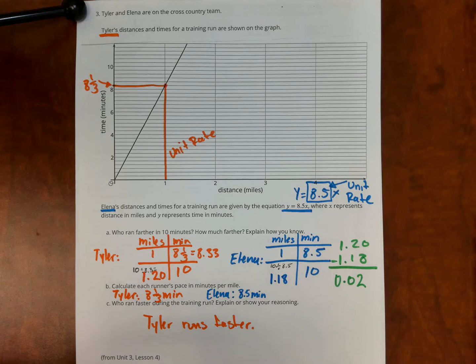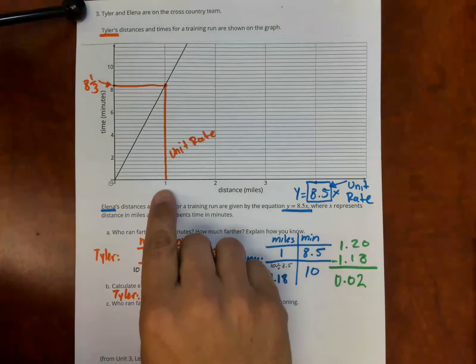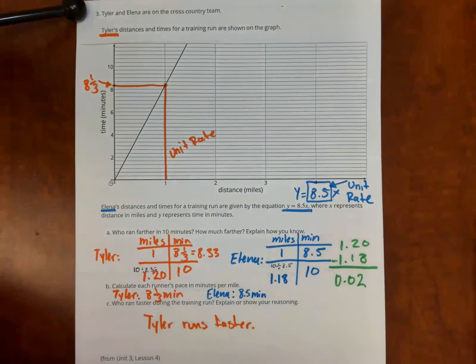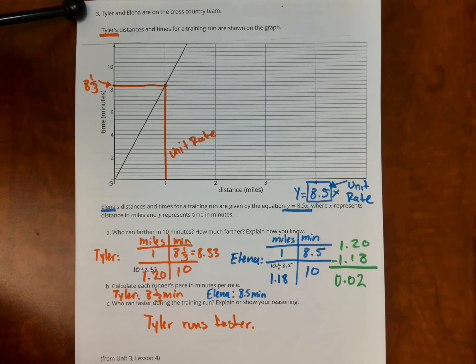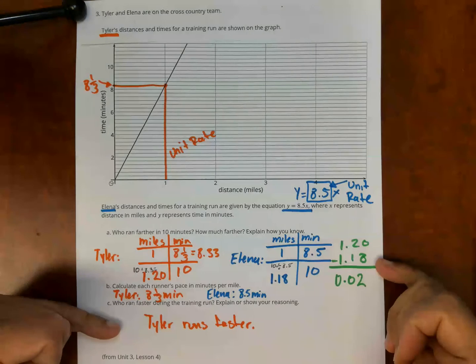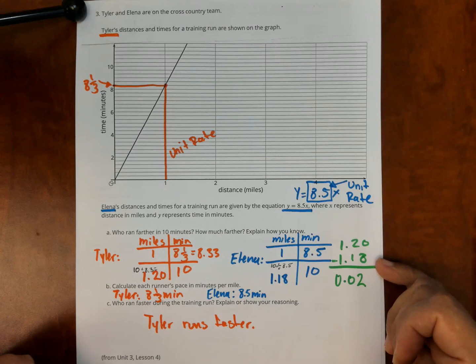So Tyler runs faster. And what we can see here, because each student is going at a constant rate, if Tyler runs faster at one minute, then you know, he's going to run faster at two minutes, at three minutes. So it's just in general going faster. And same for Elena, right? If Elena is going slower at one minute, then you know that no matter how many minutes, it will be the same person going faster. We see our explanation right here by answering part A, you're also answering part C, because if Tyler runs farther in 10 minutes, then Tyler is the faster runner.